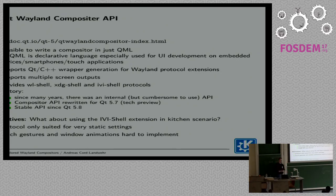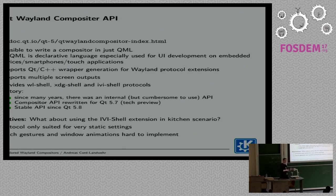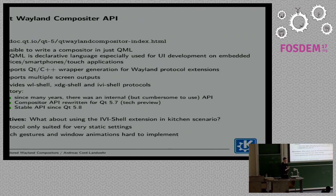The Qt Wayland Compositor framework — since about two weeks ago with the Qt 5.8 release, we now have this. For protocol extensions, you can also get a Qt-style C++ API, not only the C-style APIs, and this is automatically generated. You can, of course, have several screens if you have a device with several monitors. It implements all these different shells I talked about. The core is actually stable and has been there since several years — at least since Qt 5.0 — only the API is new. It's a really stable piece of software. They did a really nice, Qt Quick-style API to use it in a really nice way.